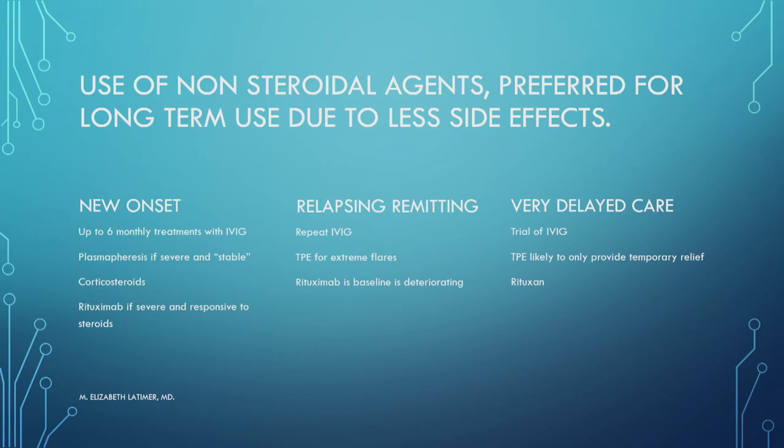Plasmapheresis is for extreme flares in psychiatrically stable children who are not going to take lines out. You do move to rituximab in this group if the baseline is deteriorating — if each subsequent flare is getting worse and worse and your baseline is deteriorating, then you can move to rituximab. With very delayed care, you might do a trial of IVIG. Plasmapheresis is not indicated in that condition, because with very delayed care there are often a lot of medicines — if you do plasmapheresis, you're taking all the medicine out all of a sudden, and that's generally not a good idea.